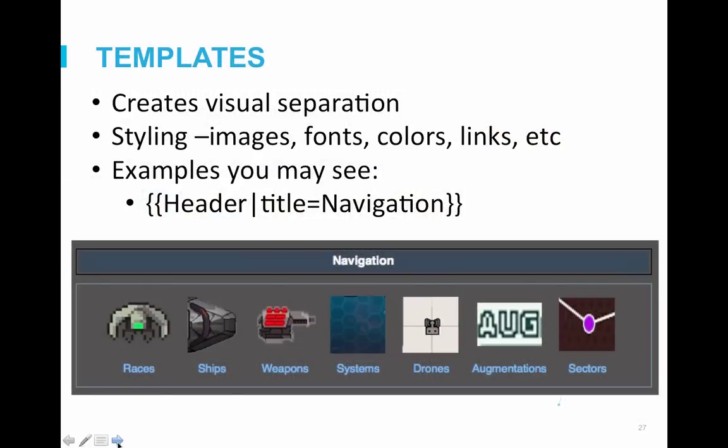One design element you may notice on most main pages are colored lines that break up sections of the wiki. On the Summoner Wars wiki, this is used to define the 'about' and 'factions' sections. These elements are templates called header templates. A template was created in the template namespace which includes its style, and when you add the template code, this style is pulled into the main page. You can define the specific words that appear, and the same template can be used multiple times with different titles. You can learn more about templates in our template videos on the help wiki.